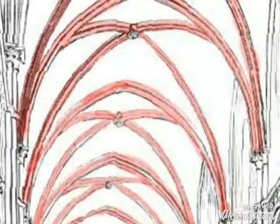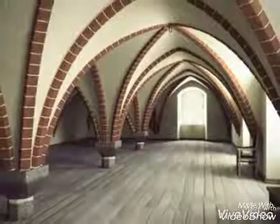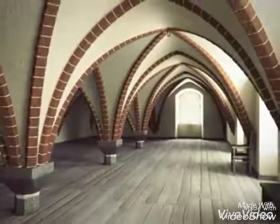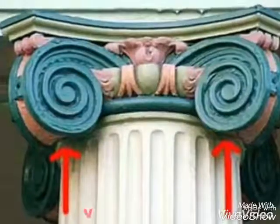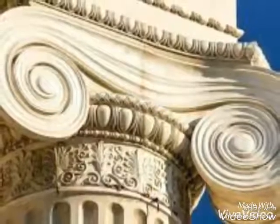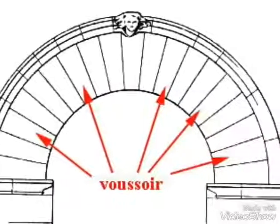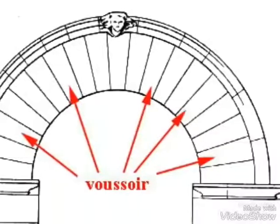Vault: a structure composed of an arrangement of arches that forms a covering over a space. Just see it in the picture and note it down. Next, vermiculated work: a vermiculated surface having a series of very disconnected grooves that resemble worms or the tracks of worms. Volute: a spiral shape, as on an Ionic column capital. Voussoir: the term for one of the blocks or units that make up an arch.